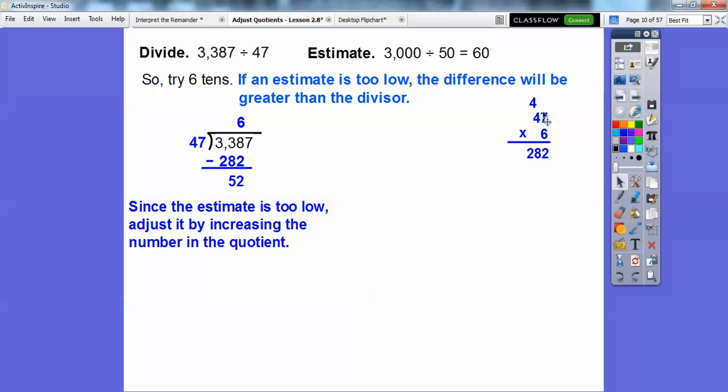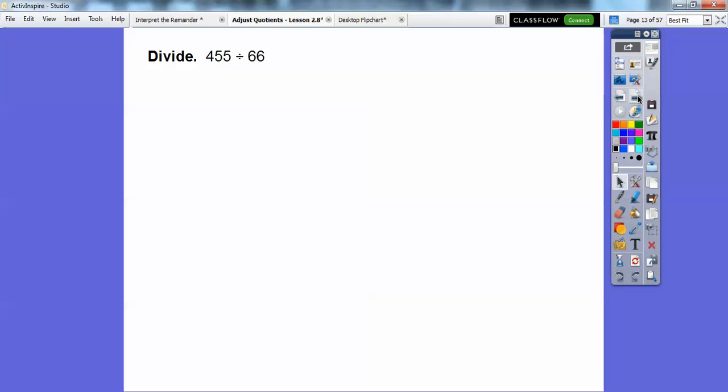Let's increase this to 7. 47 times 7 is 329. When we subtract 338 minus 329, we get 9. 9's not greater than 47, so we're good here. Let's slide down that 7. Then 47 times 2 is 94, and we get a difference of 3. So it's 72 remainder 3. We had to adjust it by going up because our estimate was too small.